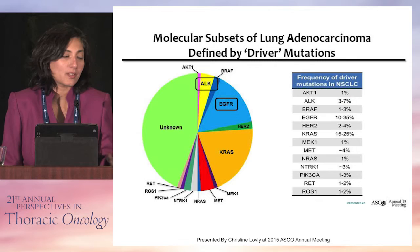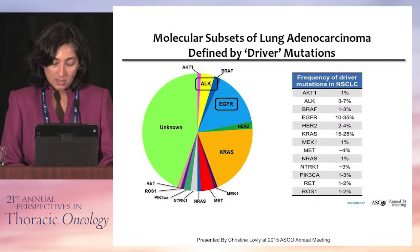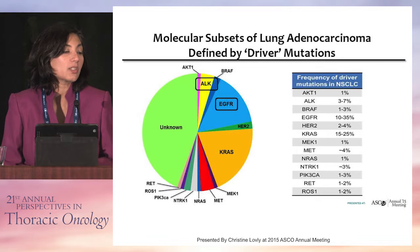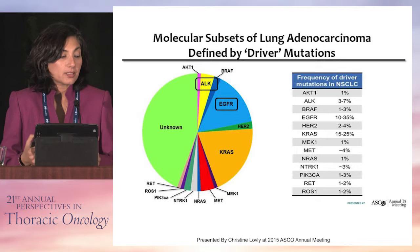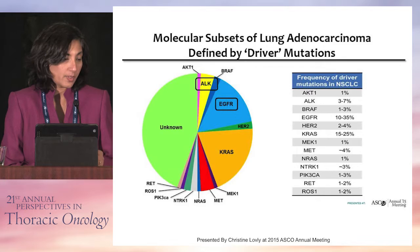This is our pie chart for actionable mutations, or driver mutations, in lung adenocarcinoma. The ones I will focus on today include the ALK translocations, which is about 3 to 7 percent of the population. Towards the end, we'll touch briefly on ROS1 and RET, and Dr. Ali is going to reveal some of the data on the other slices of the pie.